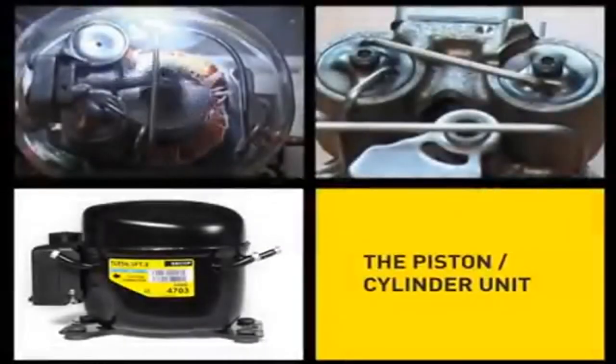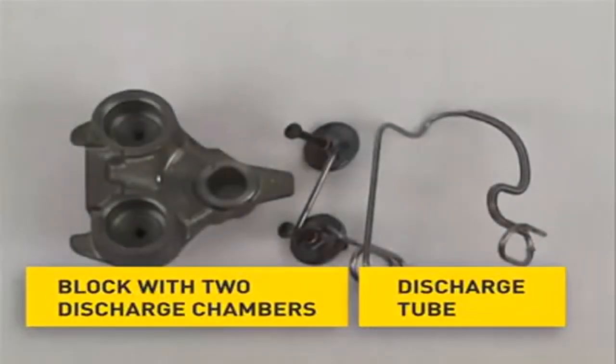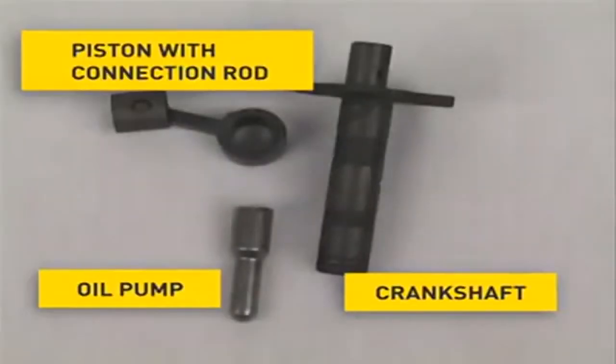The piston cylinder unit. It consists of a block on which the discharge tube is mounted. A crank shaft at the bottom of which the oil pump is mounted for the lubrication of the pump unit, as well as a piston with a piston rod connected by a piston pin.